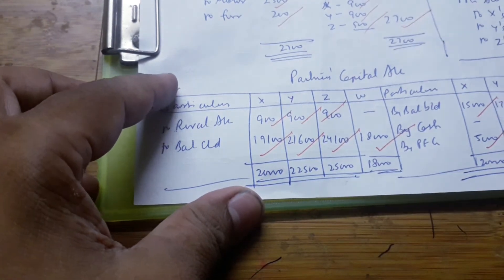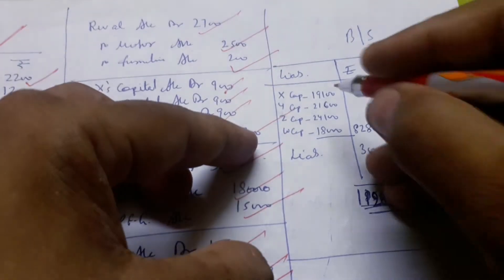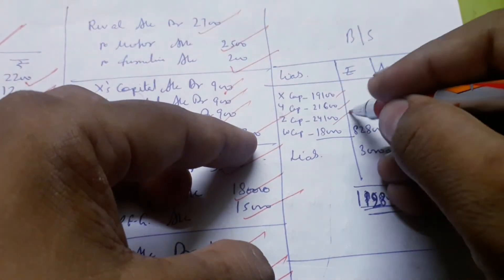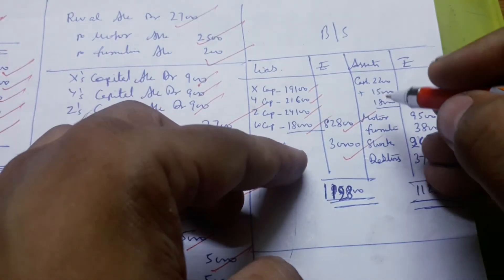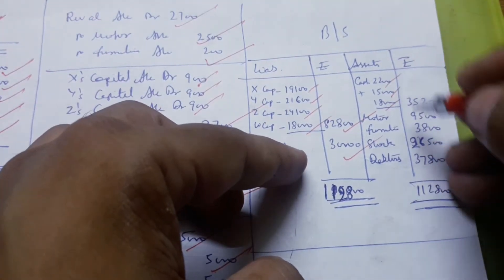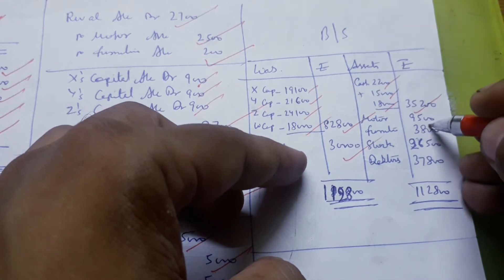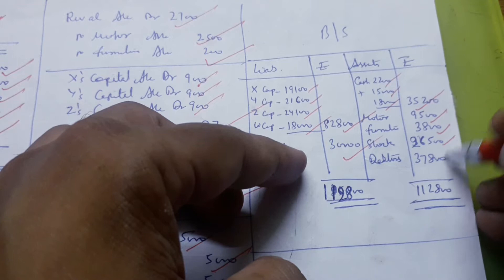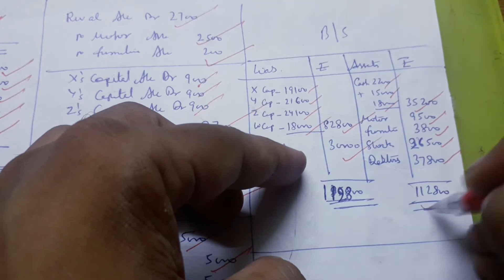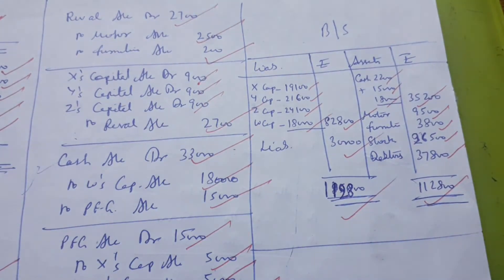Now come to the balance sheet. In the balance sheet, there are all the new capital figures: 18,000, 32,000, 35,000, 9,500, 38,000, 18,000, 18,000, and 18,000. In this way, the question is completed.